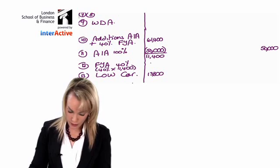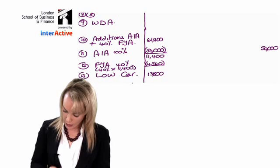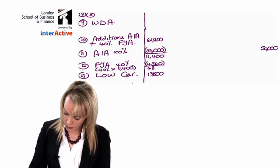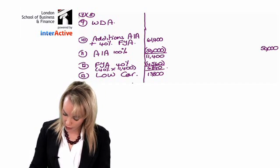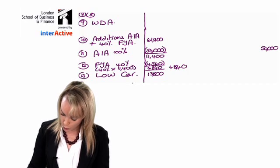That's going to be something like 4,560, and when you take that away you get 6,840. Then you've got to transfer that figure across into the general pool.